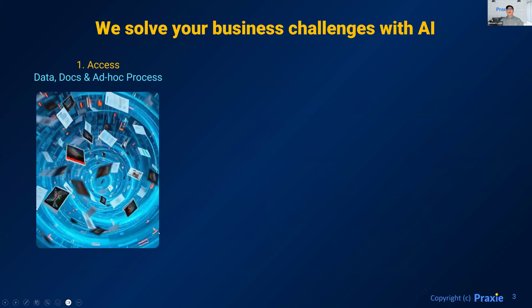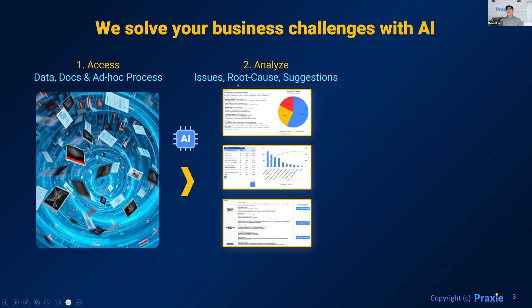The kinds of problems we solve: we take all of this different data. What I noticed when I was at SAP and other companies was that every manufacturer has a sea of data in different formats. They might have an ERP system, an MES system, but then they've got Excel sheets covering all kinds of work, ad hoc processes, or homegrown work in databases. We access all of that data. We then do the analysis — issues, root causes, suggestions, hypotheses — all of this comes out of the AI.